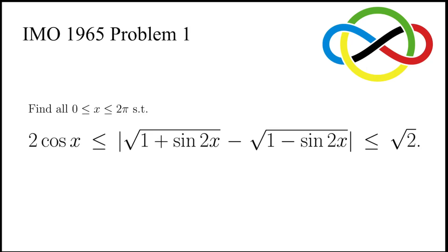In this video, we are going to solve problem 1 in IMO 1965: to find all x between 0 and 2π such that the absolute value of √(1 + sin 2x) minus √(1 - sin 2x) is both greater than or equal to 2 cos x and less than or equal to √2.